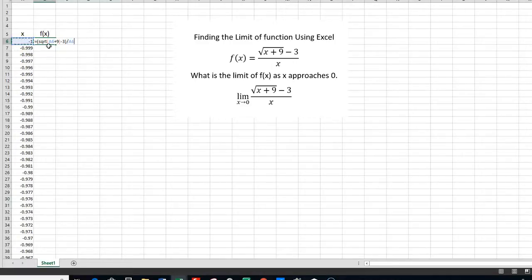So you see, I have the square root of a6, which is the x value, the first x value, plus 9, minus 3 over x. And it has a value in it, like that.